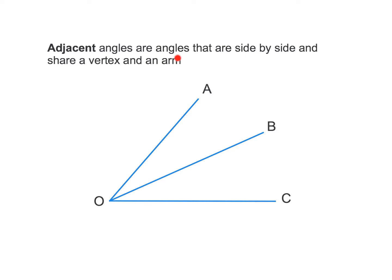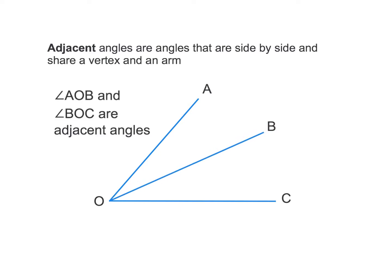By definition, adjacent angles are side by side and share a vertex and an arm. Here we have angle AOB and angle BOC. They share a vertex, and they also share this arm over here. So angle AOB and angle BOC are adjacent angles.